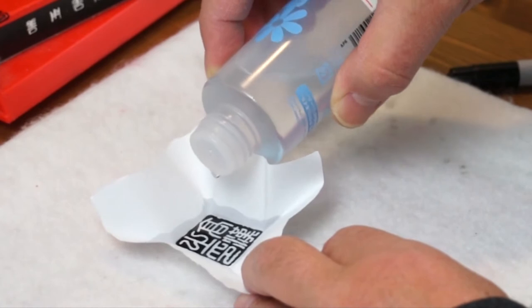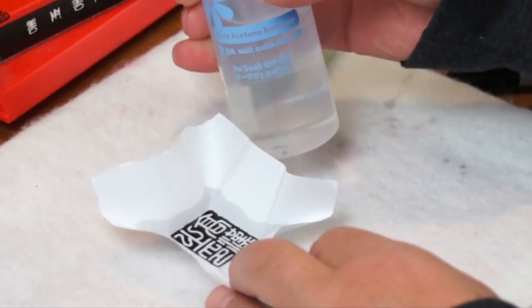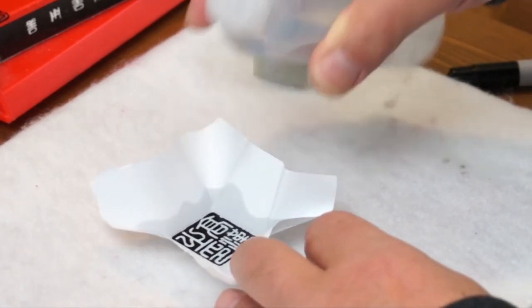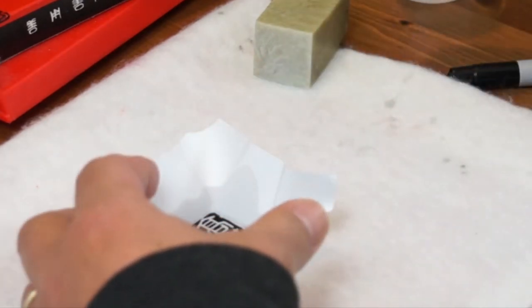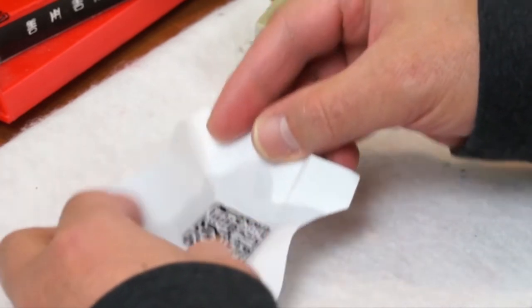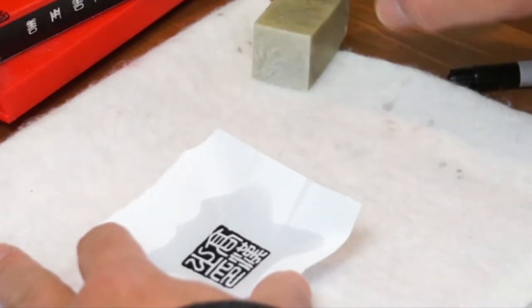So I pour some liquid called acetone. It's a nail polish remover. Make sure all the design is wet. It dries very fast. So let it evaporate a little bit.